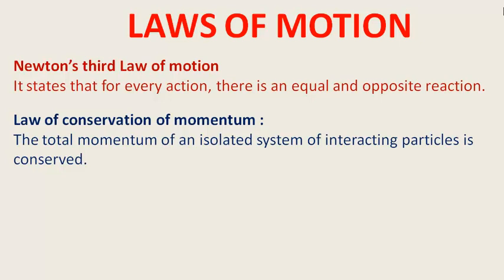अब इसके साथ पुराना law जो है — conservation of isolated system — जिसका momentum conserve होता था, वो साथ में यहाँ use होता है। क्योंकि equal and opposite forces हैं, तो system के internal net forces zero बन जाती हैं। यही आपका principle था कि अगर बाहर से external force नहीं लग रही है, तो momentum constant या conserve रहेगा।